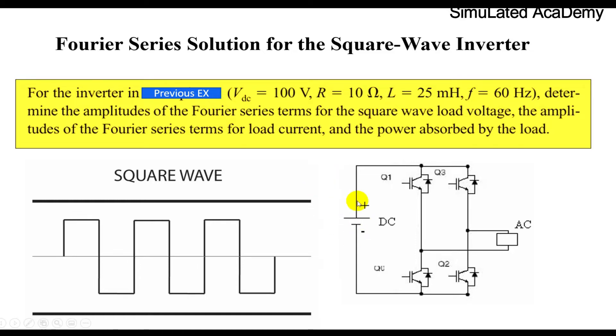We are said that the input voltage is 100 volt while the load is 10 ohm and 25 mH and the frequency is 50 Hz for the MOSFET switching. We are asked to find the Fourier series term for the load voltage as well as for the load current. And at the same time, you are asked to find the load that absorbs some amount of power.